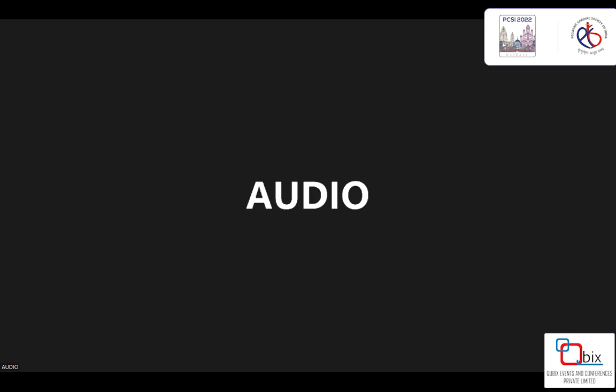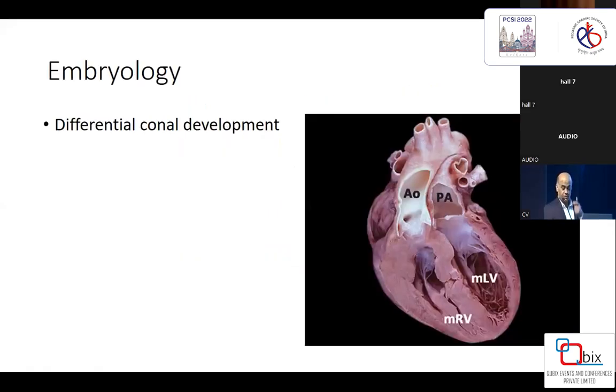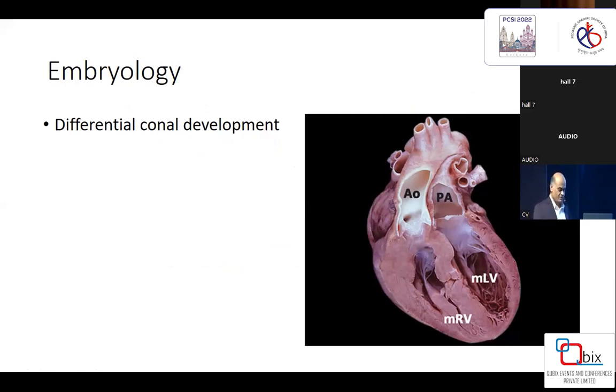TGA is a fairly common complex cyanotic heart disease, representing almost five to ten percent of that. TGA with VSD and left ventricular outflow tract obstruction forms probably less than a fourth of the TGA spectrum.